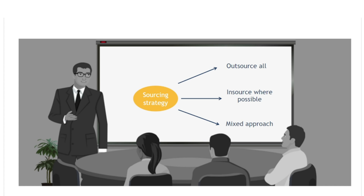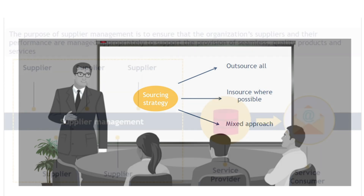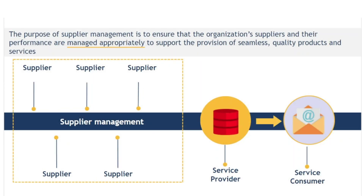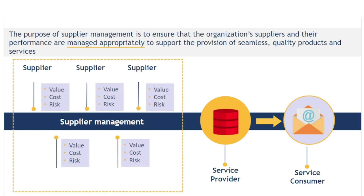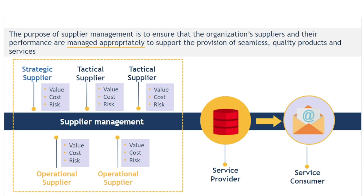Wherever third parties are involved, the purpose of this practice is to ensure that suppliers and their performance are managed appropriately to support the provision of seamless, quality products and services. Consider the words 'managed appropriately' — the attention invested in managing a supplier should be proportionate to the importance the service provider places on the supplier relationship. Supplier management acts as a single point of visibility and control for all suppliers and supplier contracts, allowing a service provider to understand the true value, costs and risks associated with each supplier. Organisations are then able to categorise suppliers accordingly — for example, as strategic, tactical, operational or commodity suppliers.